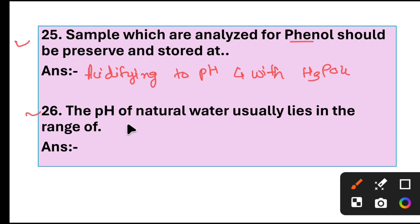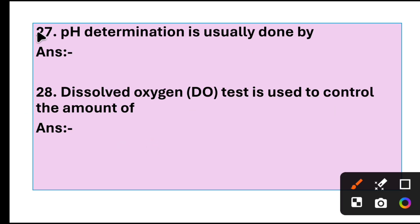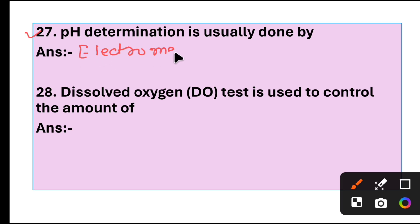Question 26: The pH of natural water usually lies in the range of 4 to 9. Question 27: pH determination is usually done by? Answer: Electrometric method.